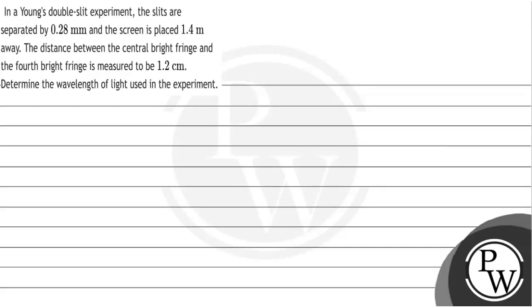Hello, let's see the question. The question is: given that in a Young's double slit experiment the slits are separated by 0.2 mm and the screen is placed 1.4 meters away. The distance between the central bright fringe and the fourth bright fringe is measured to be 1.2 cm. Determine the wavelength of the light used in the experiment.